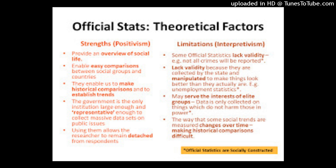Bivariate analysis in sociological research refers to the analysis of two variables to determine the relationship between them. Bivariate analyses are conducted to determine whether a statistical association exists between two variables, the degree of association if one does exist, and whether one variable may be predicted from another.